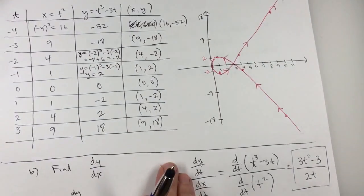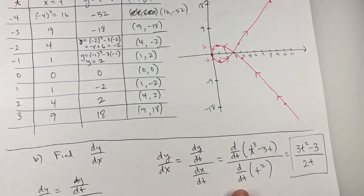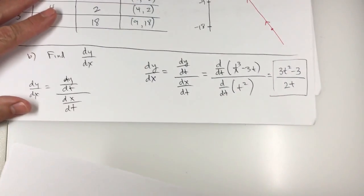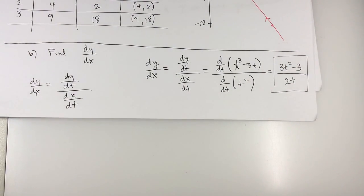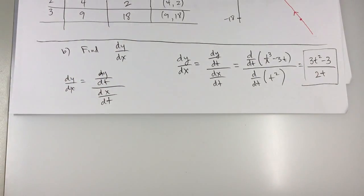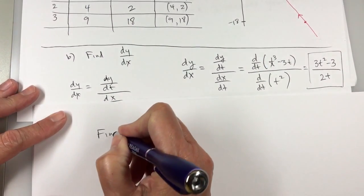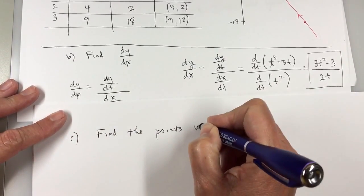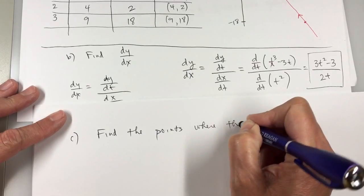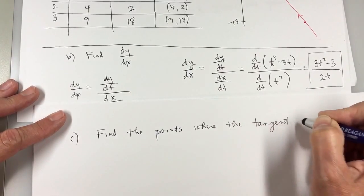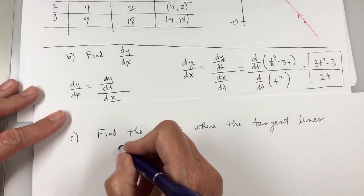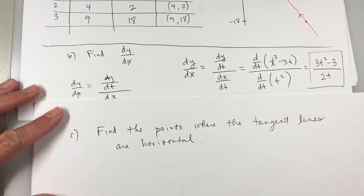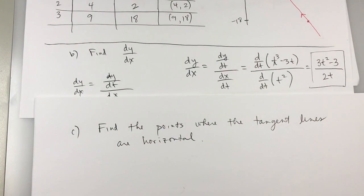Part C on my list here is to find the points where the tangent line is horizontal. Part C find the points where the tangent lines and maybe there's more than one tangent line or horizontal. Well, if it's a horizontal tangent line, then what's the slope? Zero.